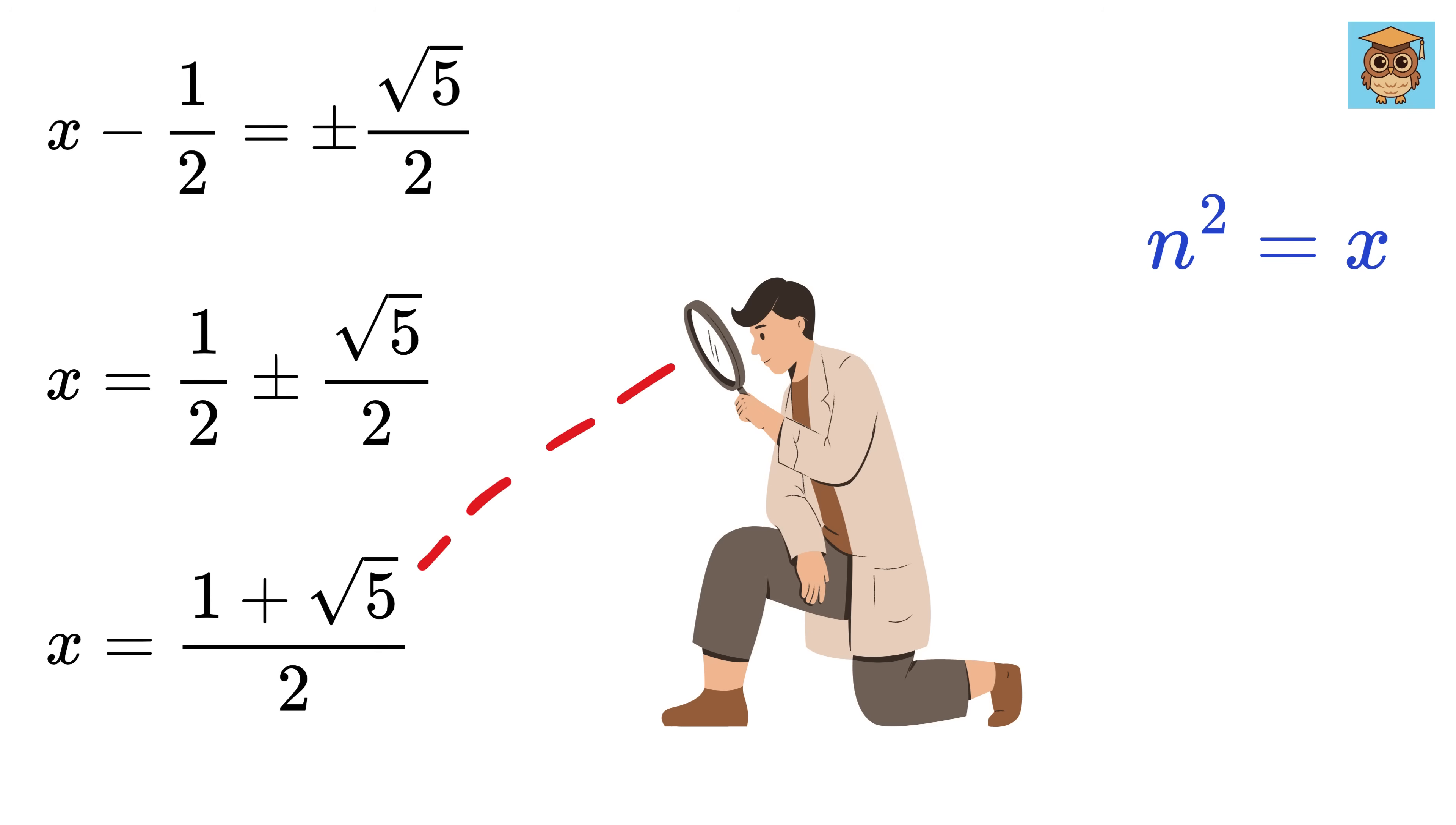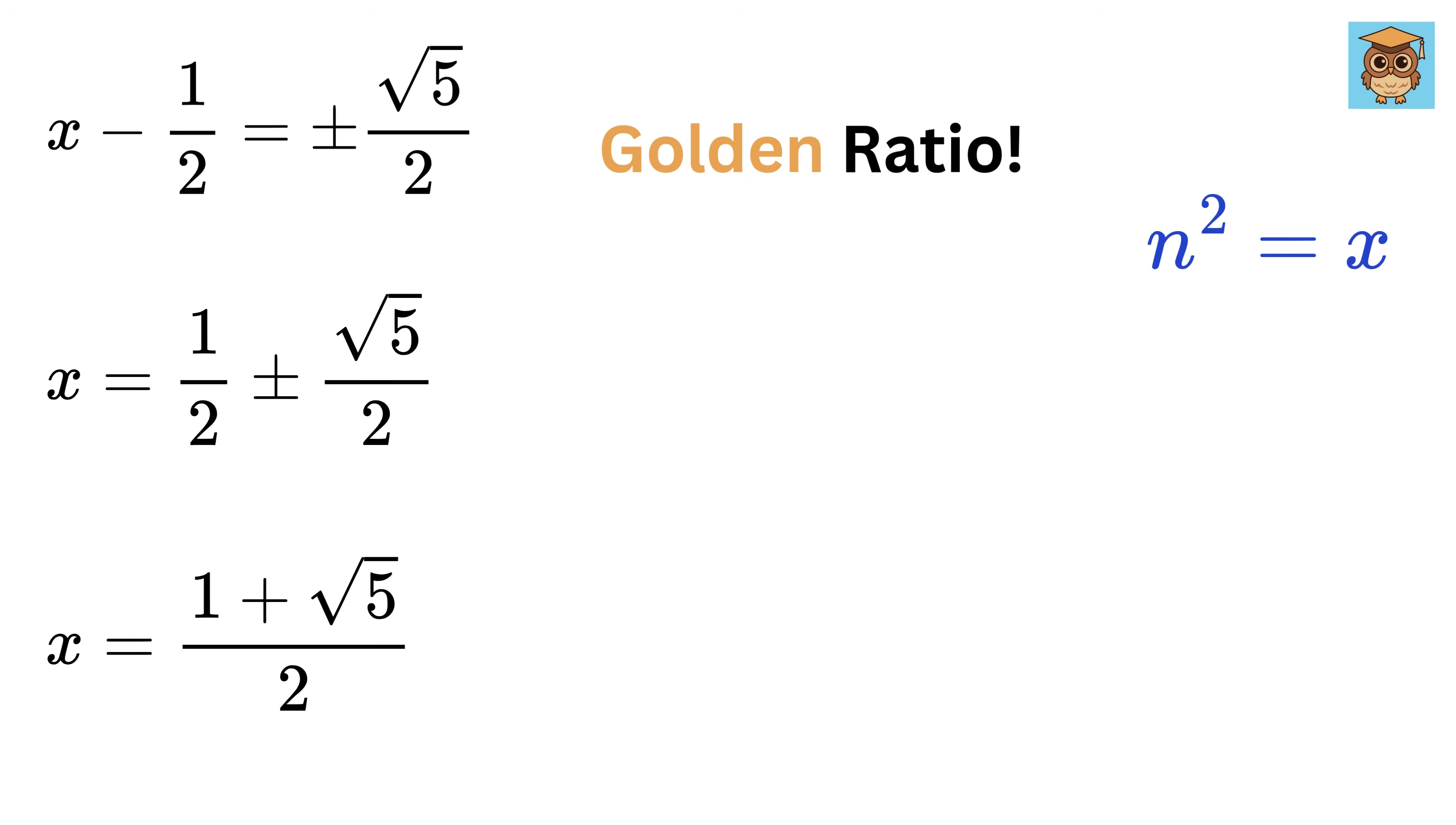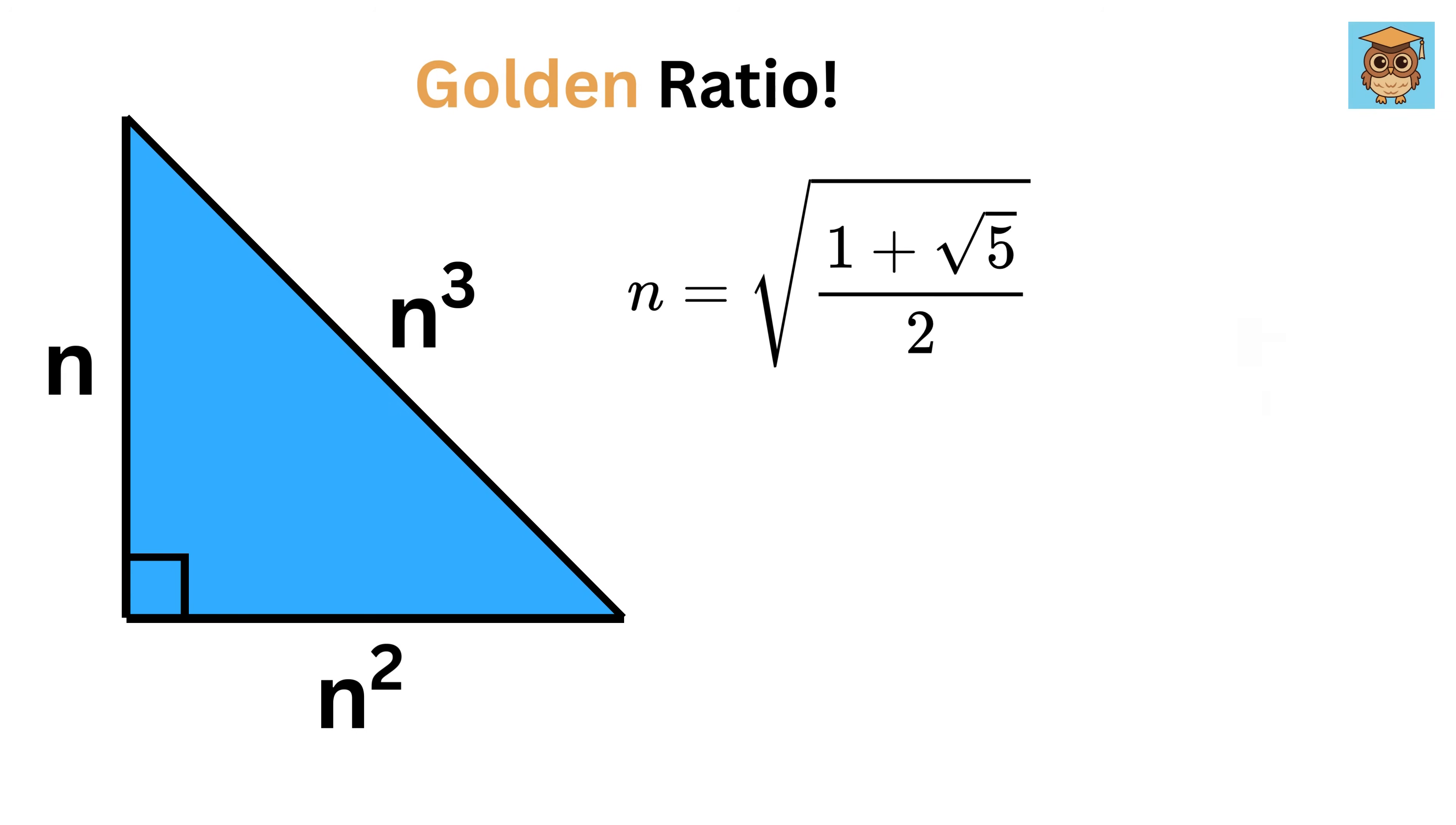This is what I was talking about. As our job was to find the value of n, so it will be square root of this golden ratio. The golden ratio isn't just any number, it's a symbol of harmony and perfection.